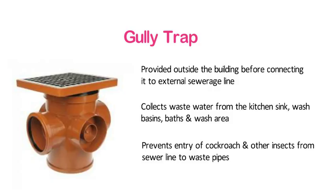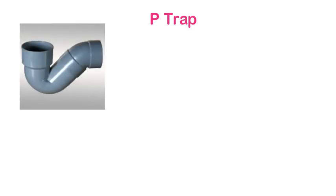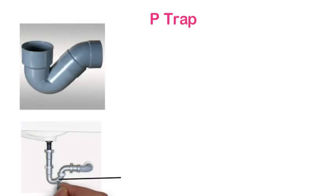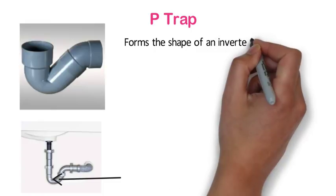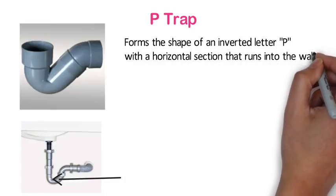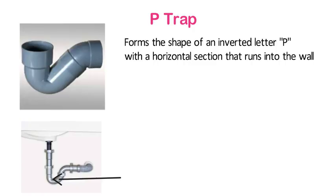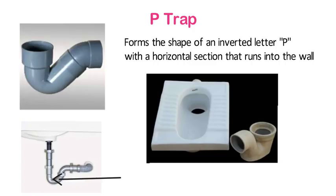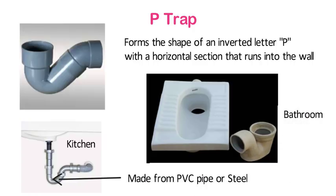P trap, Q trap and S traps are classified according to their shapes. P trap: if you look under any sink, you will see a curved pipe connected to the drain. In most cases, this pipe forms the shape of an inverted letter P with a horizontal section that runs into the wall where the drain is located. This trap is used with Indian water closet, Orissa pattern, kitchen and bathroom. These kinds of traps are made from PVC pipe or steel.